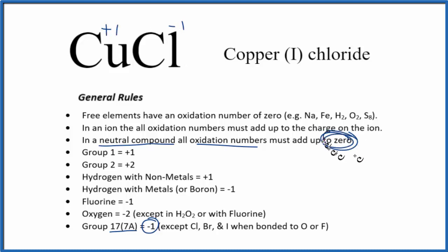Plus 1 minus 1 gives us our zero. You'll note that we have this plus 1 here, that's why we call this copper 1 chloride.